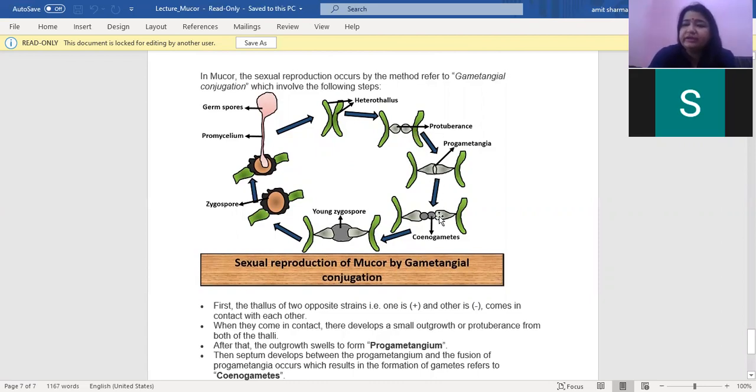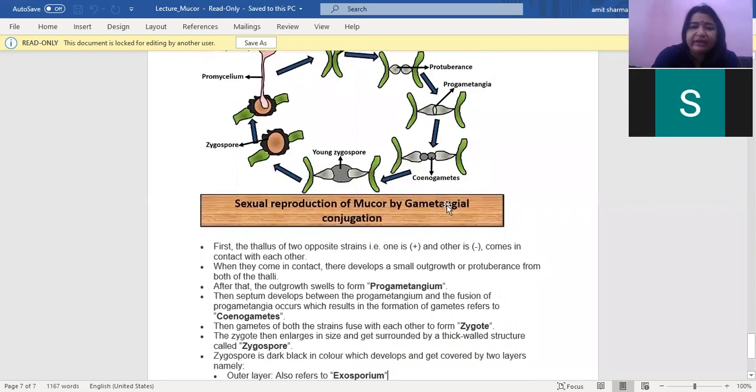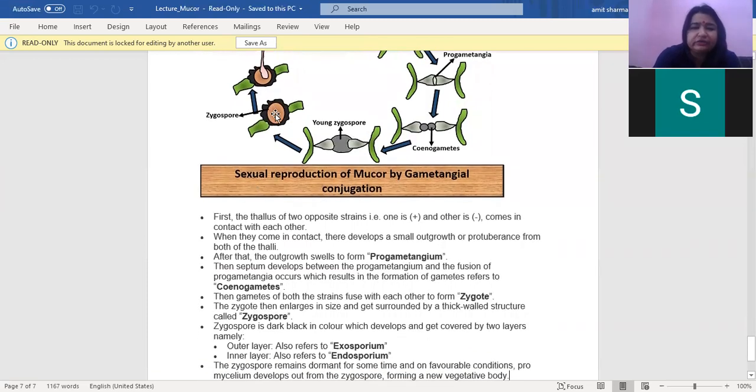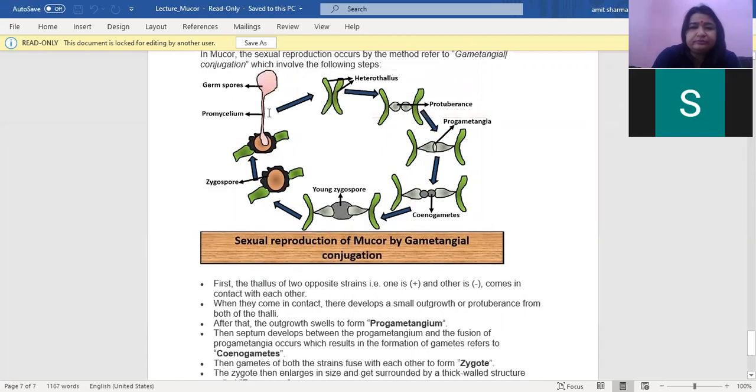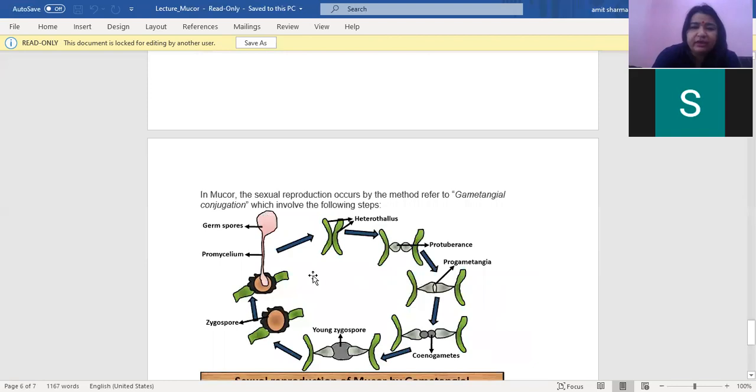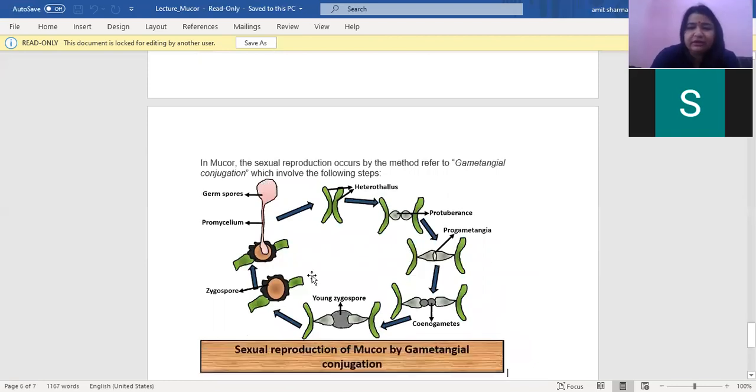They form the zygogamete. Zygo means after fusion. These gametes are called zygogametes. Zygogametes contain both strains and these zygogametes then fuse to form a young zygospore. The zygospore is thick-walled and develops two walls. The outer wall is called the exosporium, whereas the inner wall is called the endosporium. The zygospore remains dormant for some time and on the set of favorable condition, it forms the promycelium, and then this promycelium forms the mycelium.